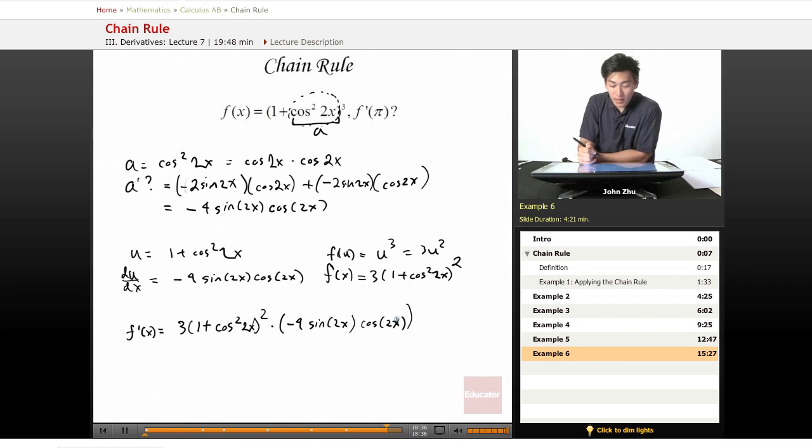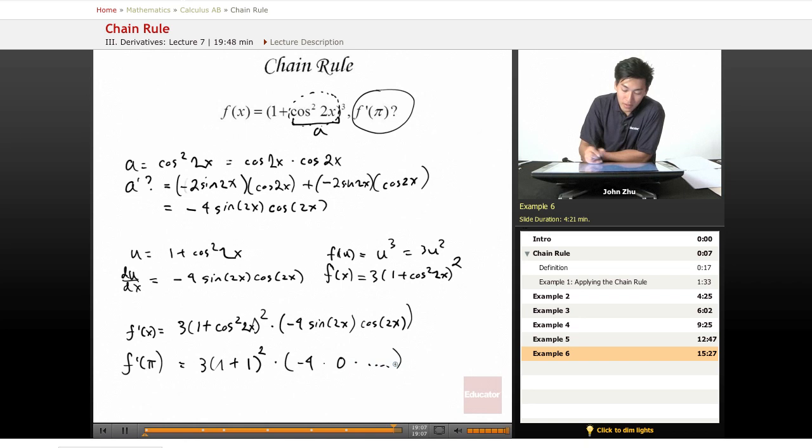We can simplify this down a little bit, which might be difficult because there's a square term times a sine and a cosine. So we'll just leave it be, but we have to recognize that this is our actual question, f'(π). So we'll plug in π. We get 3(1 + 1²)² times -4... Well, sin(π) is 0, so this term doesn't matter. So this whole thing becomes 0.